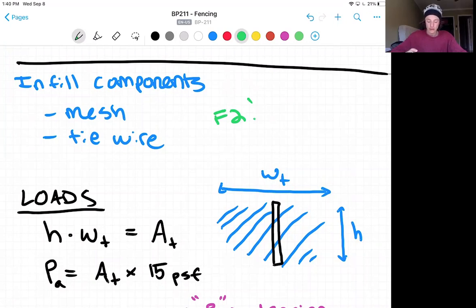So we can go into first a quick revisit of the loads that we're going to experience. And as you remember, there is a tributary width component and the height of the post above the approach ramp that is having the infill components attached to it.